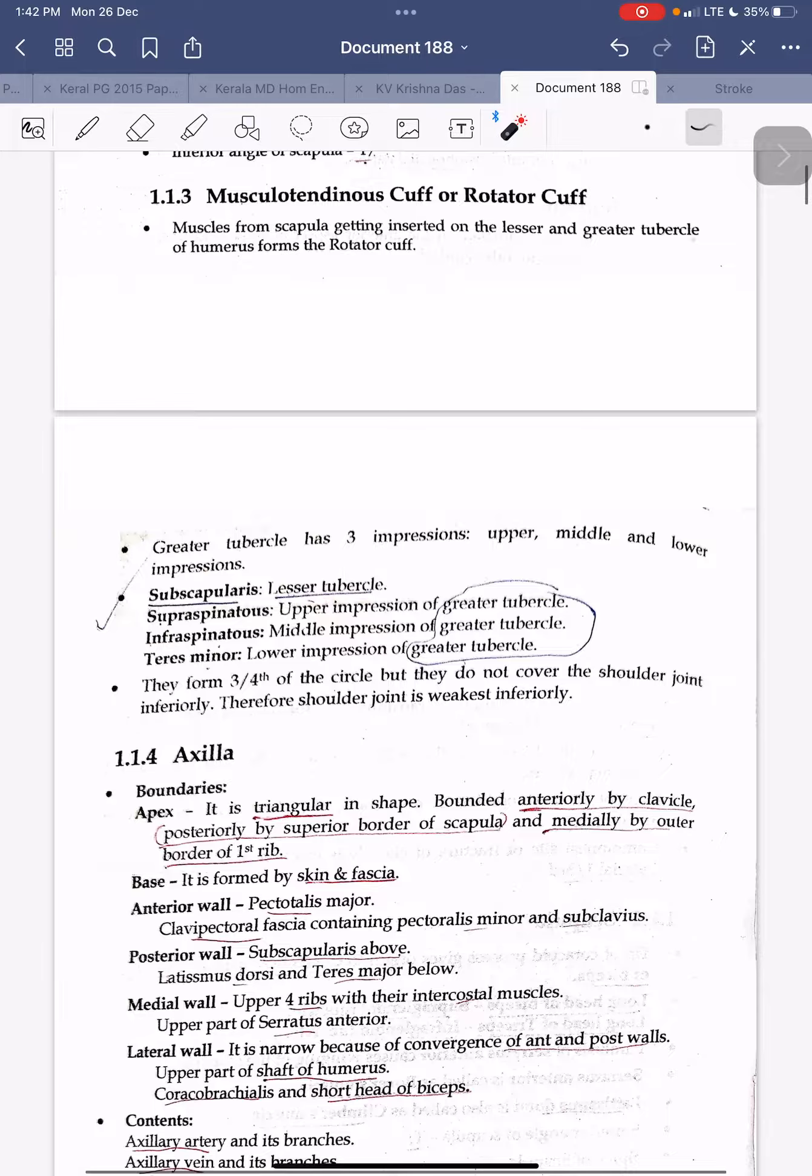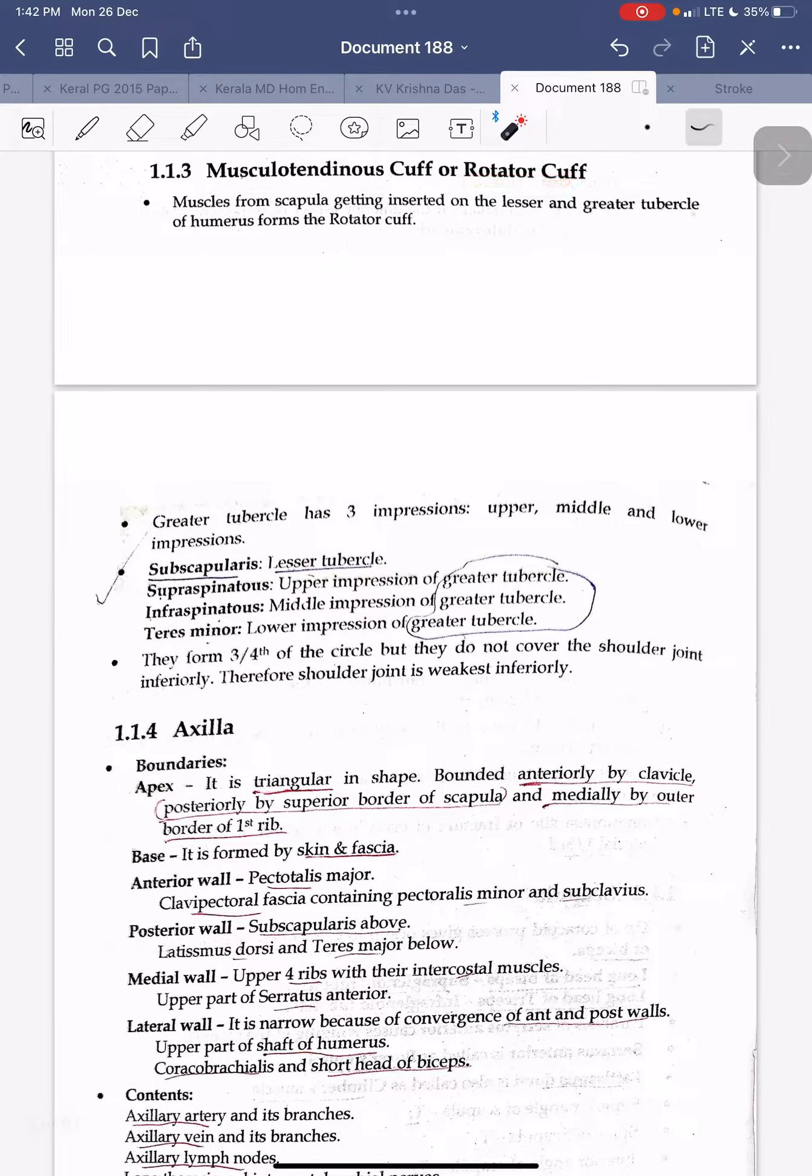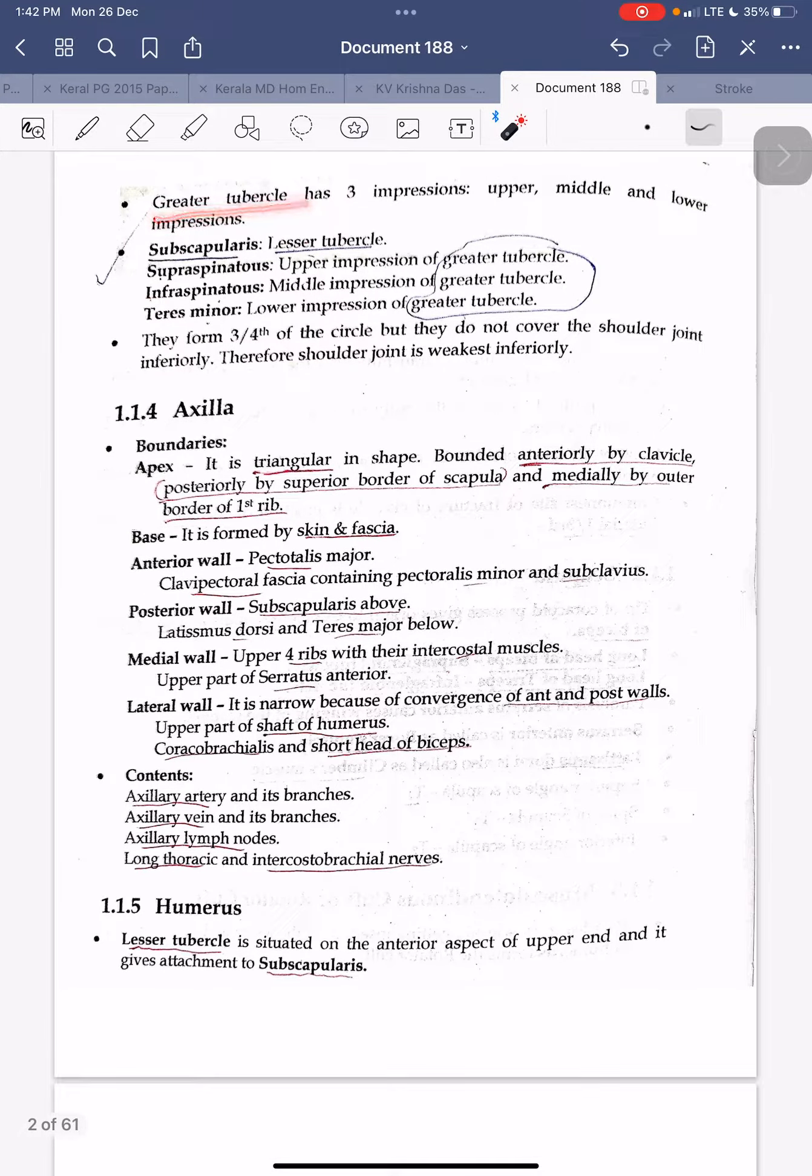Next is musculotendinous cuff or rotator cuff. Muscles of scapula getting inserted into the lesser and greater tubercle of humerus form the rotator cuff. Greater tubercle has three impressions: upper, middle, and lower. Subscapularis is from lesser tubercle. Infraspinatus from middle impression of the greater tubercle. Supraspinatus from upper impression of the greater tubercle, and teres minor is from lower impression of the greater tubercle.